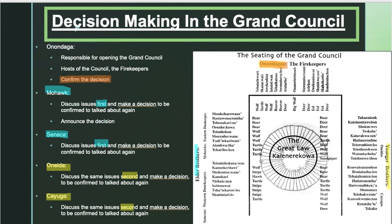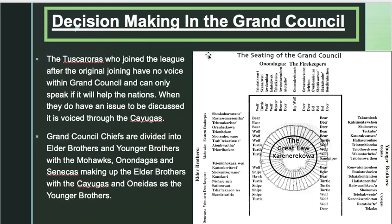There is a sixth nation — the Tuscarora — who joined the league after the original founding. They joined later and were quite small, so they didn't have a direct representative in the Grand Council. However, when issues arose that involved them, the Tuscarora were represented by the Cayuga, one of the younger brothers. So the sixth nation's voice is carried by one of the younger brothers.